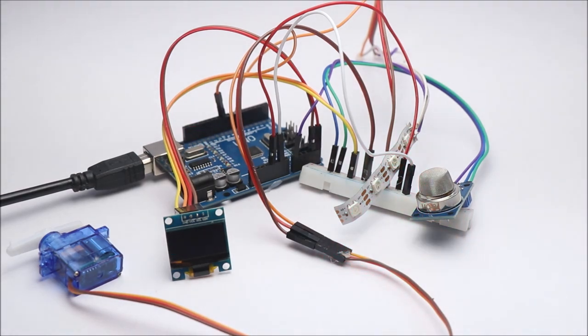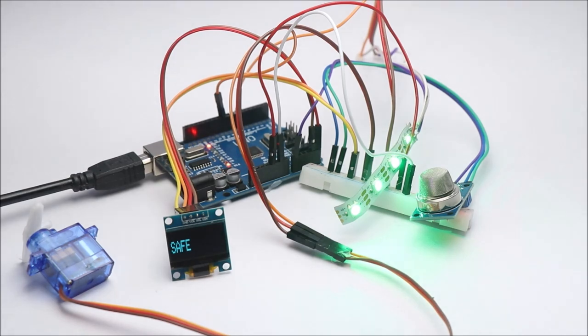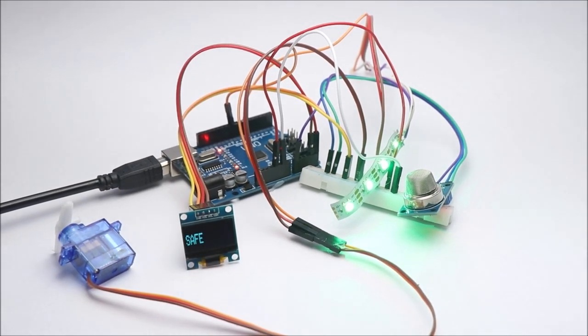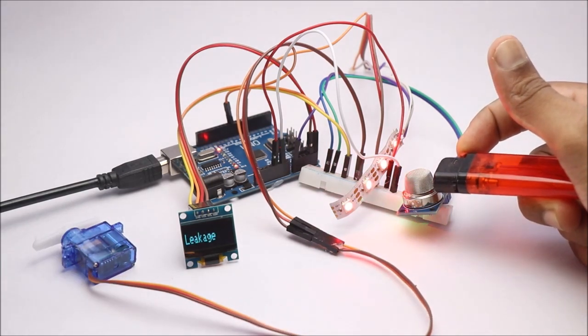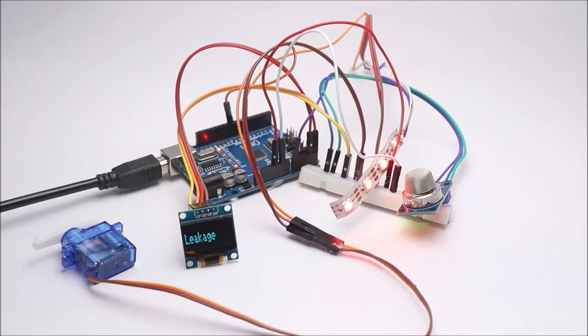When gas is detected, the strip turns to red, OLED reads leakage, and servo horns will rotate. We can utilize this mechanism to turn off the regulator.